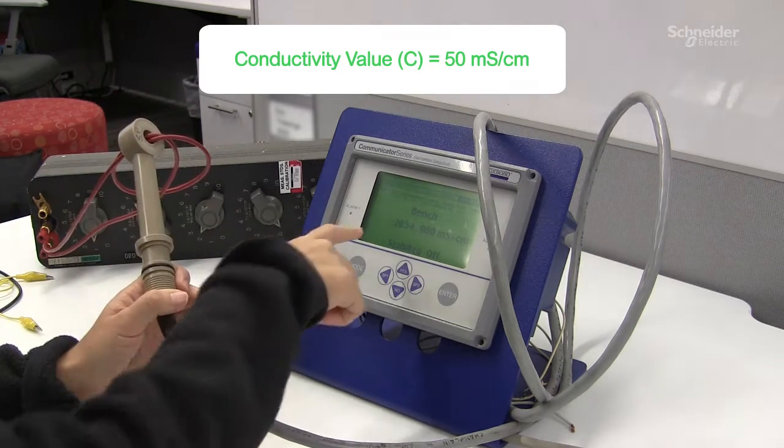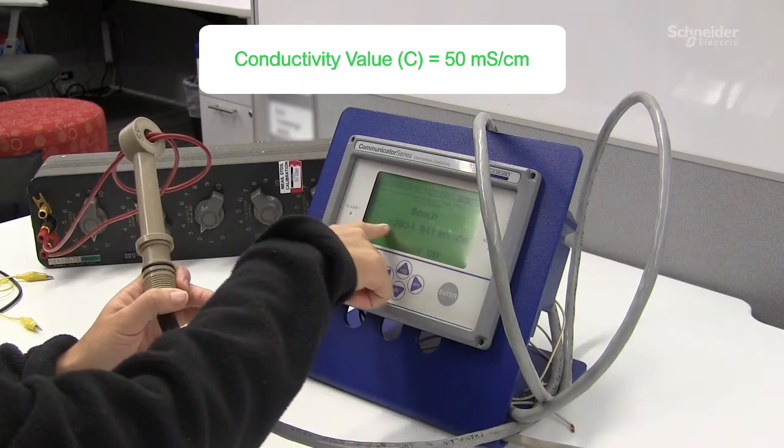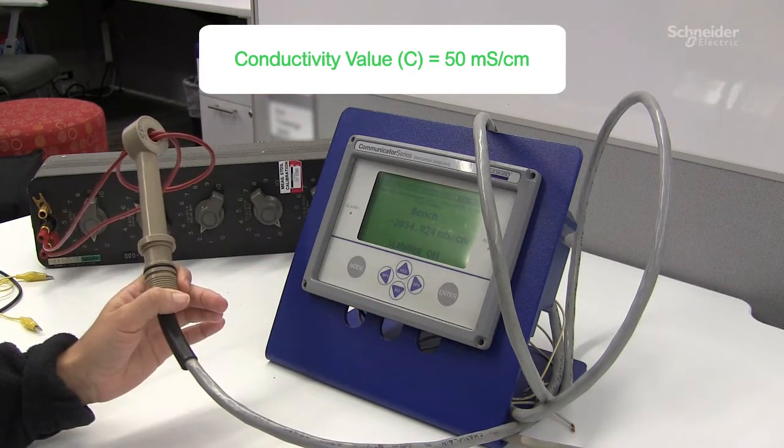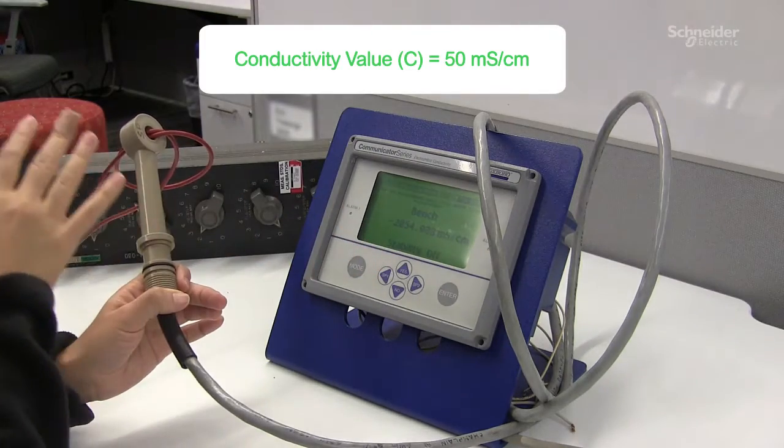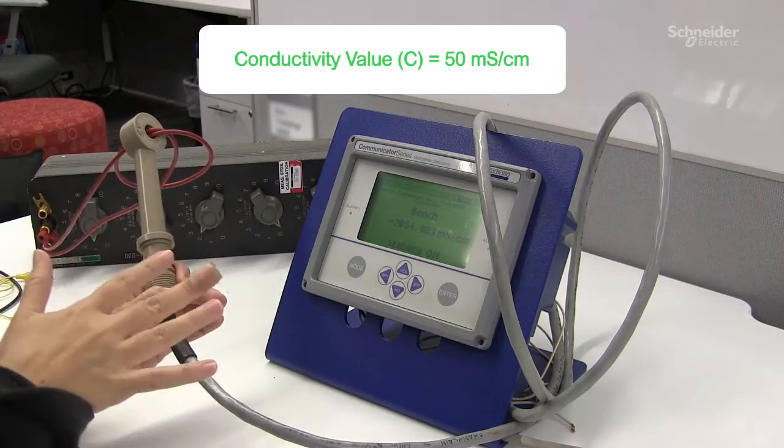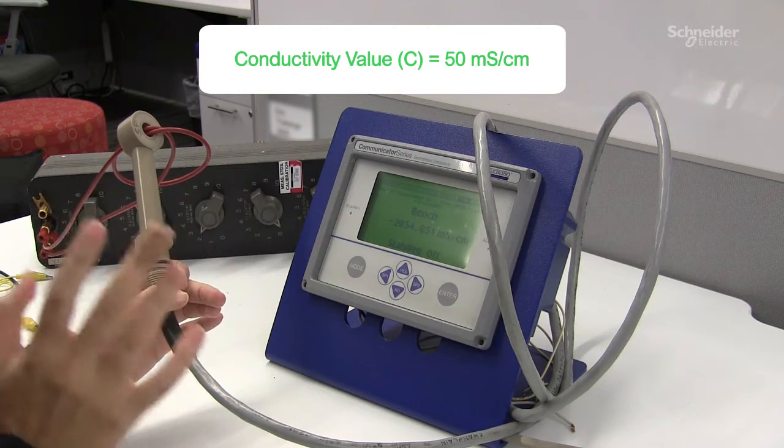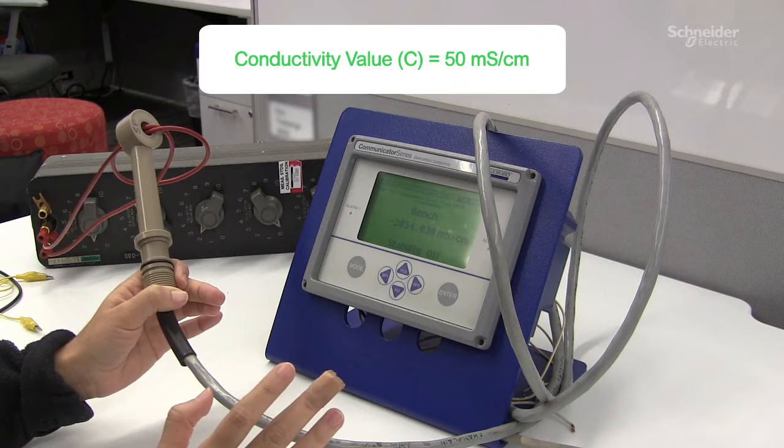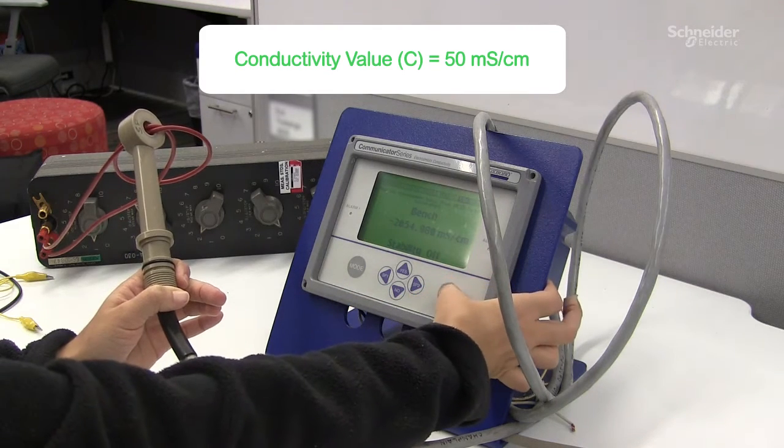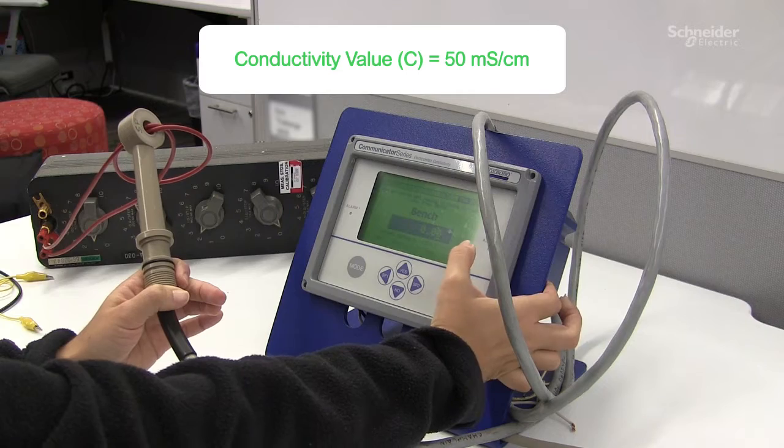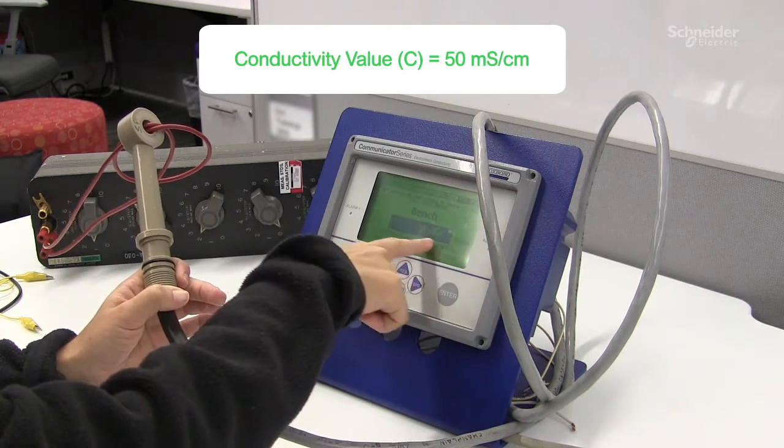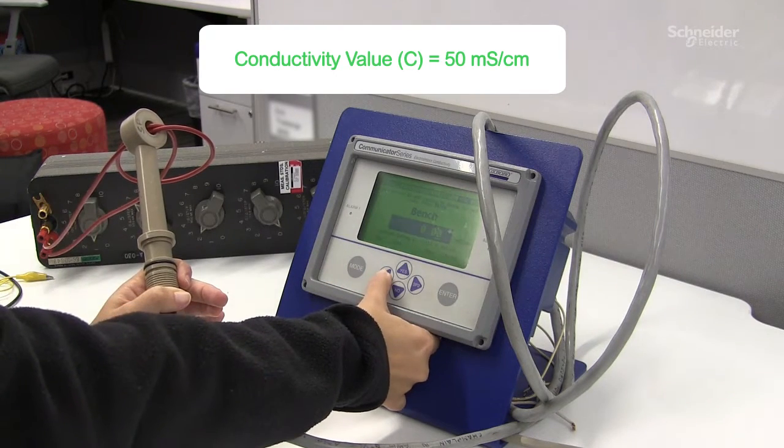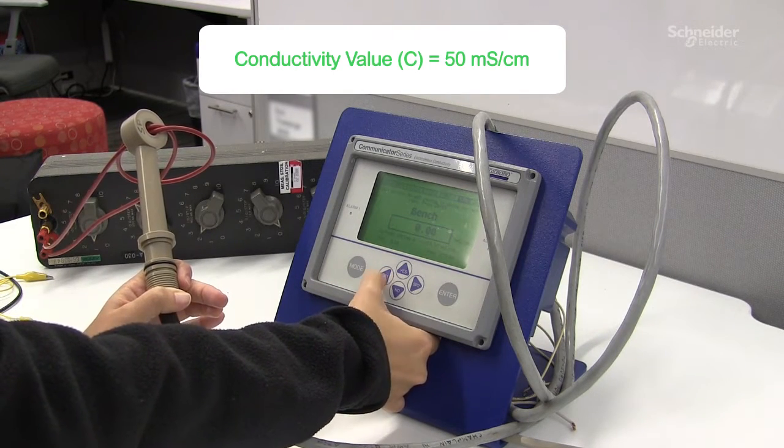Do not worry if the values that you see on screen are completely deviated. That's the reason why we are calibrating. So once you have given some time for the measurement to stabilize, give it a couple of seconds. You're going to press enter. The selection box is going to be shaded but do not worry, press the left arrow key.